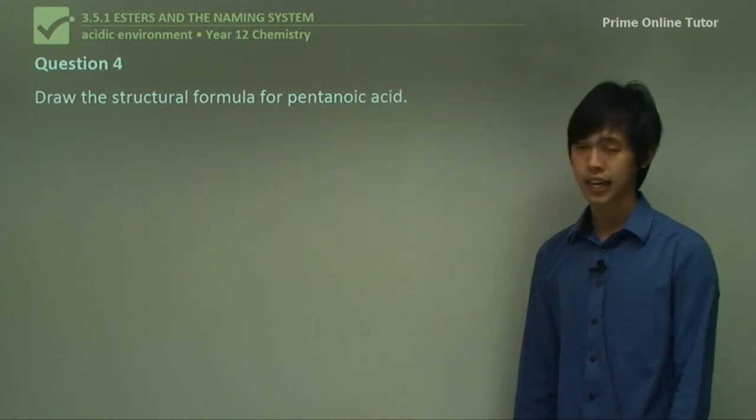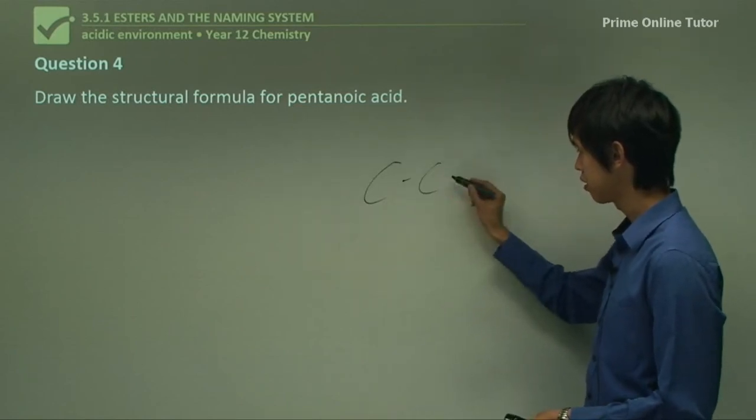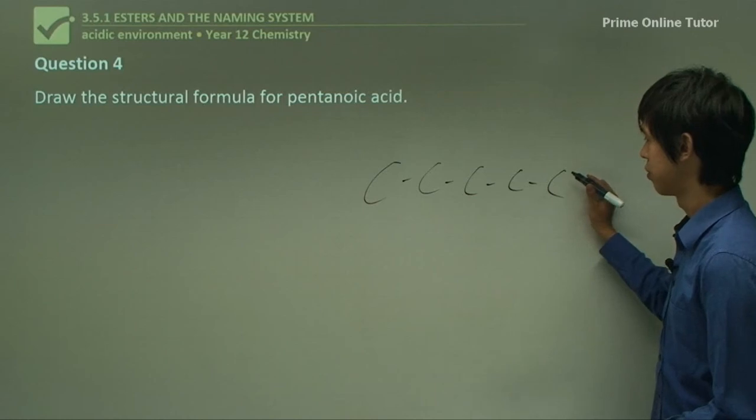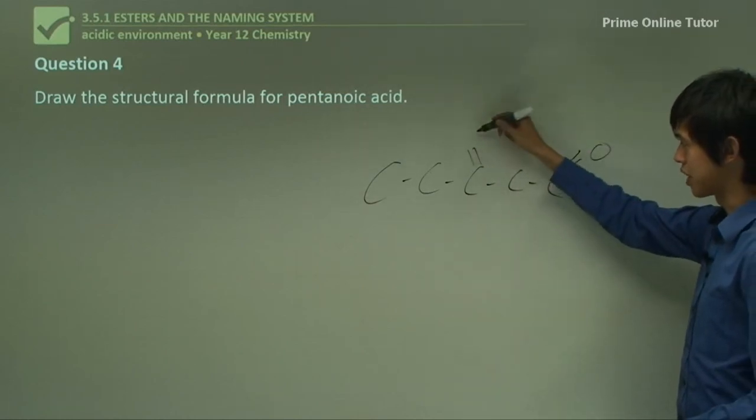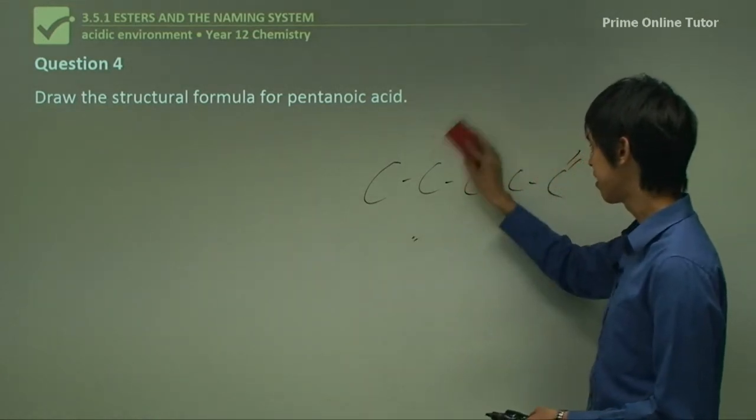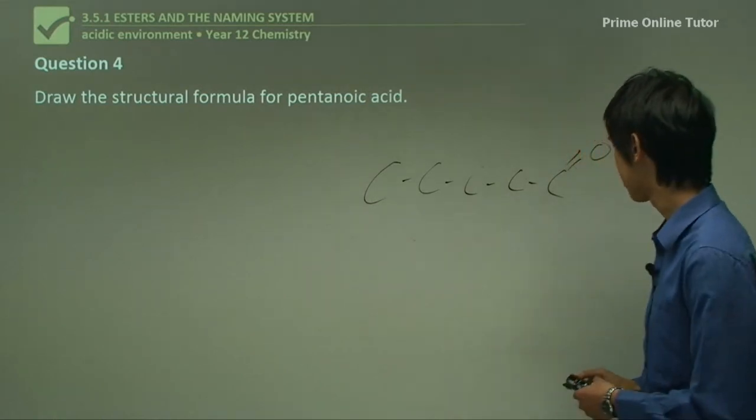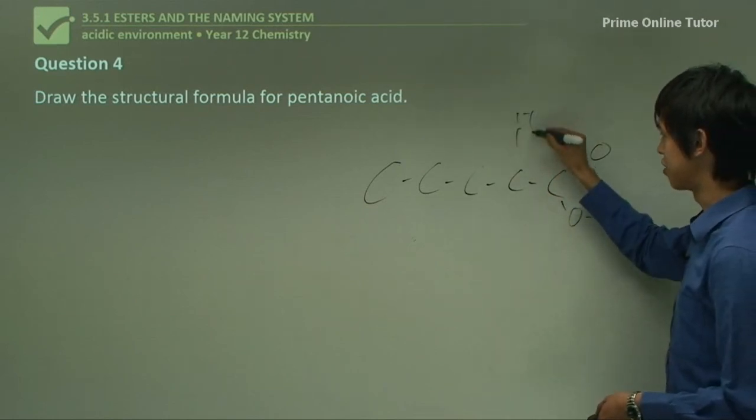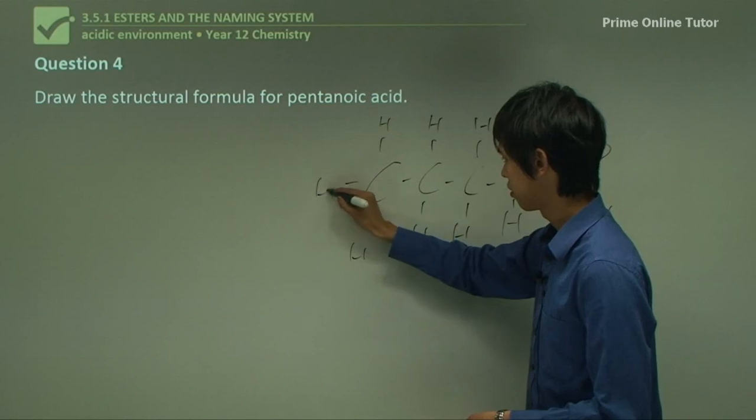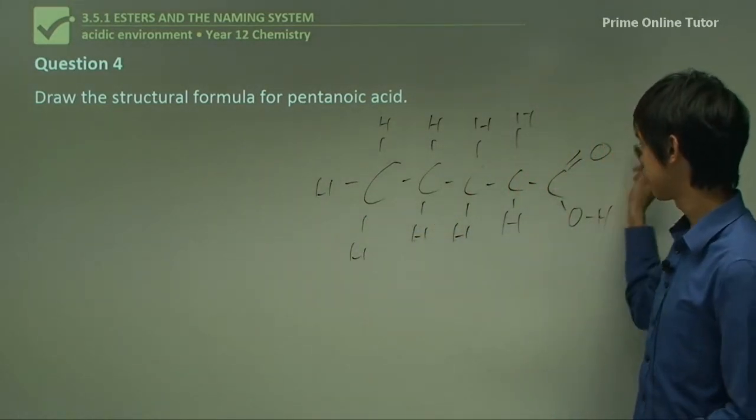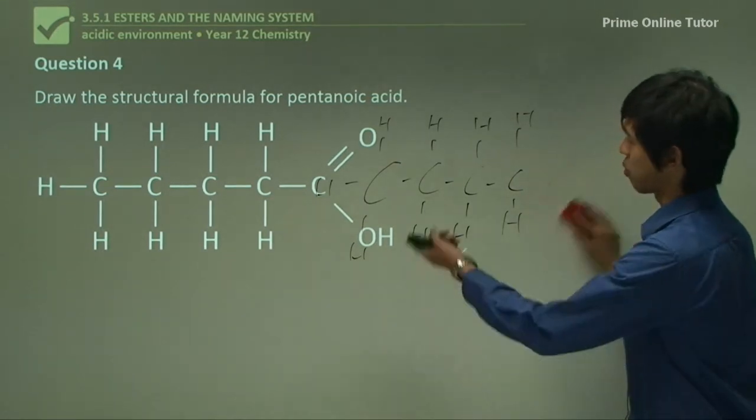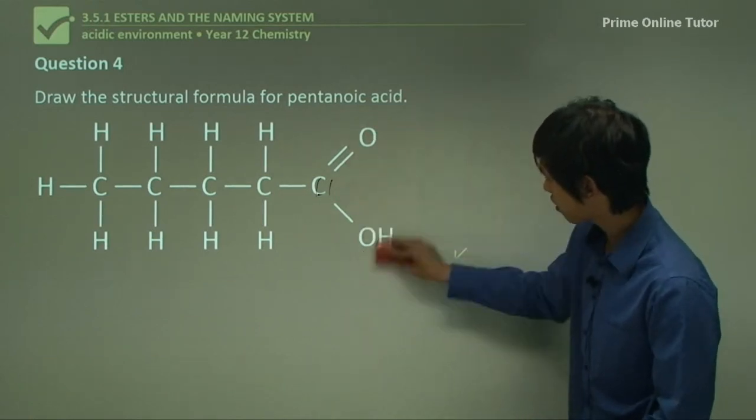Draw the structural formula for pentanoic acid. Pent is five carbons long. Now, the question is pentanoic acid - where can the double bond O go? Well, it can only go in one place, at the end. Because you can't put a double bond here and then an OH here, because that would be too many bonds. There's five bonds there. So it can only go in one place, the end. It could go on this end or this end, but that doesn't matter. And then the remaining hydrogens have to go in. Pentanoic acid. You've got an alkanoic acid group at the end.